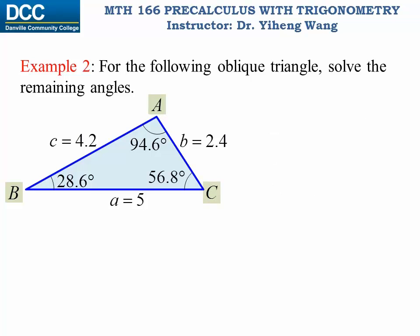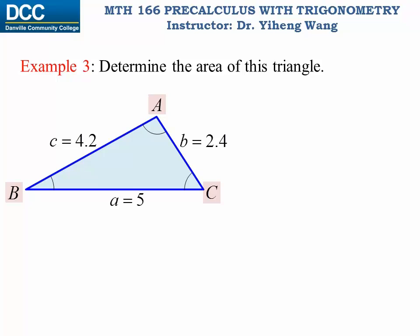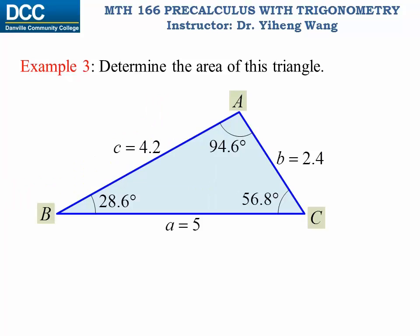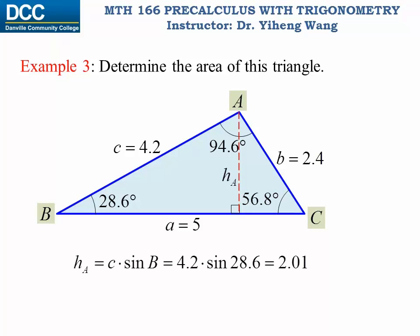The triangle is now fully solved. For the next example, we need to determine the area of this triangle — the same triangle worked on earlier. Since we've applied Law of Sines and Law of Cosines to solve all six parameters, we can determine any height. Here, height h_a equals c times sine b, which is 2.01. The area is one-half base times height, giving 5.03.